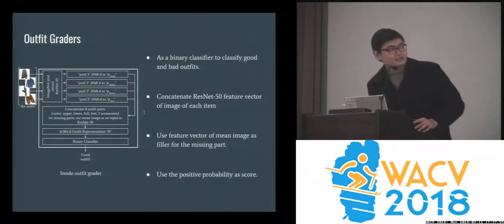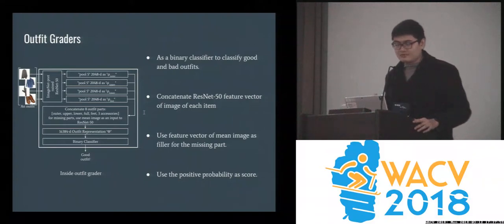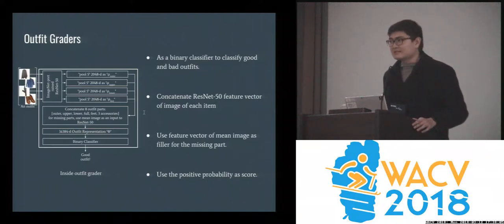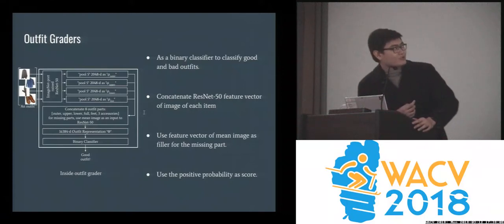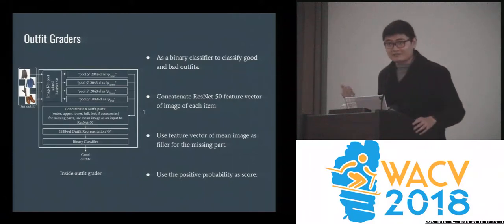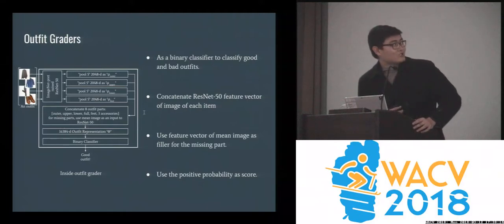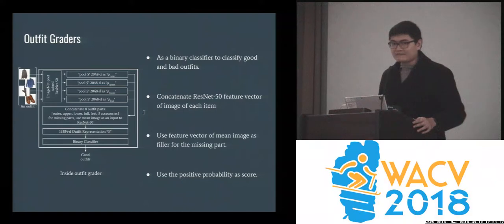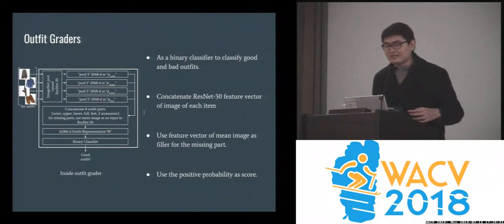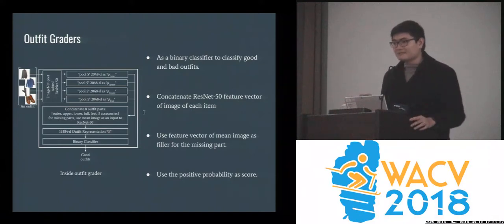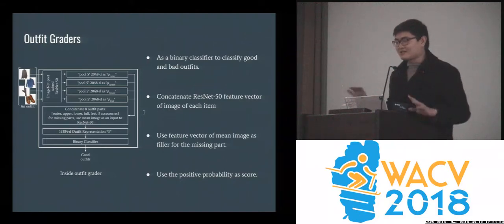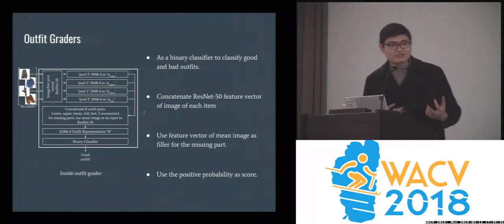The outfit grader is implemented as a binary classification problem, using positive probability as the score for an outfit. We use ResNet-50 to extract feature vectors, then concatenate the feature vectors of all eight outfit parts. Since some parts may be missing — for example, if you wear a shirt and pants you cannot also have a dress — we fill blank parts with a placeholder item, and use fully connected layers as the classifier.